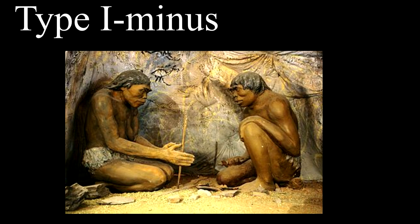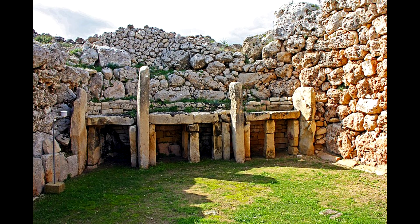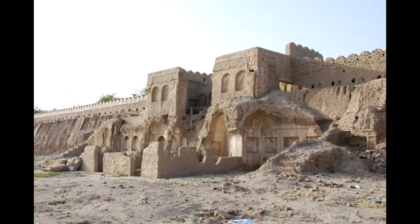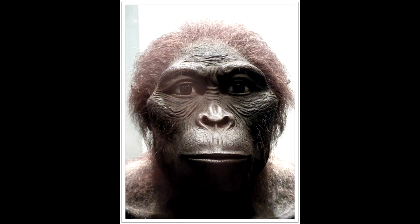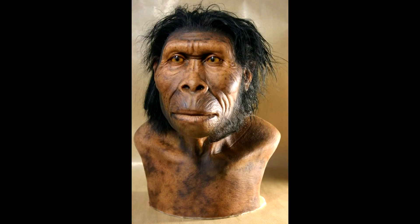Type 1-minus is any civilization that has begun to manipulate objects in their own macro scale. This can be making use of natural reactions, manipulating metals and alloys in the form of toolmaking, firemaking, building structures, mining, etc. The first confirmed achievement of this status was in early hominin species such as Australopithecus and Homo habilis, around 2 million years ago.